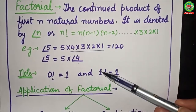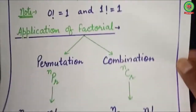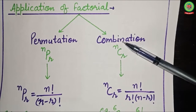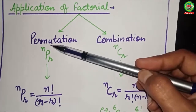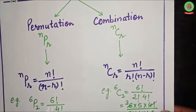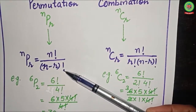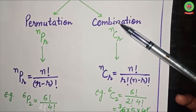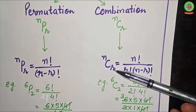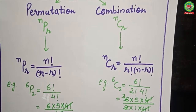Now let's look at the application of factorial in both permutation and combination. The formula for permutation is nPr, expressed in terms of factorial as: nPr = n! / (n−r)!. Similarly for combination: nCr = n! / (r! × (n−r)!).